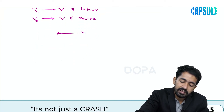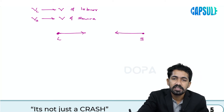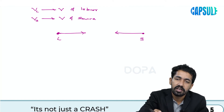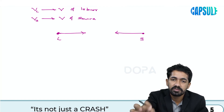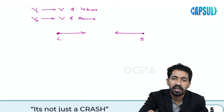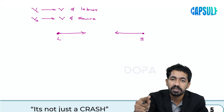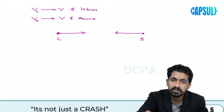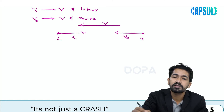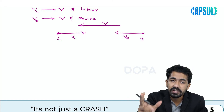In this case, the listener and source are approaching each other. We look at the direction of the arrow marks to write the equation. The direction of velocity of sound will always be towards the listener, because the listener is hearing the sound and the sound is coming from the source. So the velocity of sound is always directed from the source to the listener.